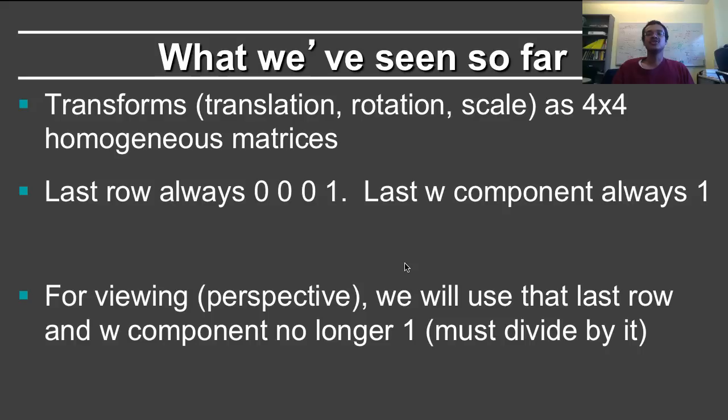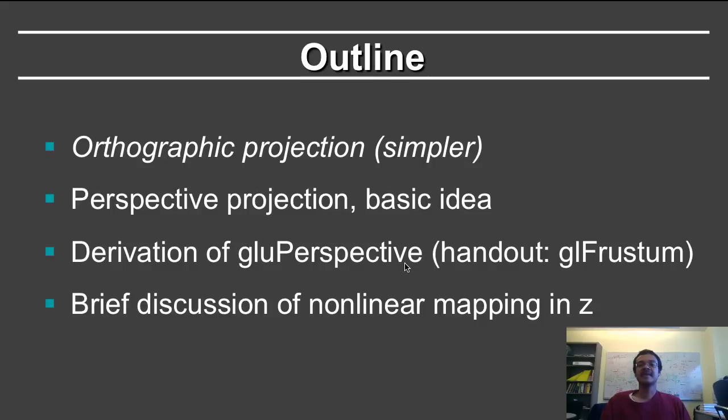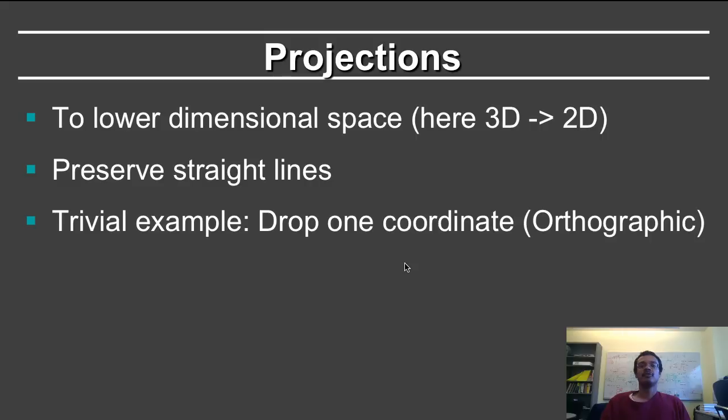The last row in these matrices has always been, so far, 0, 0, 0, 1, just keeping the w coordinate unchanged. For viewing transformations, we will play with this last row, as well as other parts of the matrix. This segment deals with orthographic projection, which is the simplest one. Then we'll deal with perspective projection, which is the most common way in which images are created.